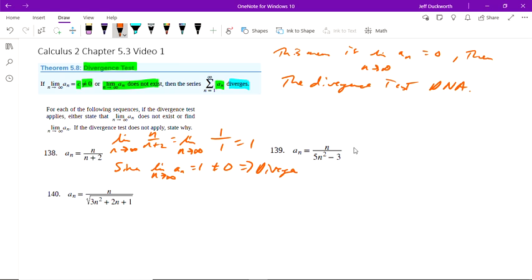Next one: limit as n approaches infinity of n over 5n² minus 3. We have a bigger value, we've got a squared value of n in the denominator versus numerator. We could run L'Hôpital's if we want, but we know what happens from calculus one with this limit.